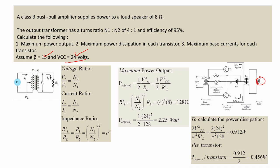This problem involves transformer turns ratio relationships. The secondary voltage is V2 = (n2/n1) × V1, so V2/V1 = n2/n1. The current ratio is I2/I1 = n1/n2 — the inverse. The impedance ratio is RL_dash / RL = (n1/n2)², where n1/n2 is the turns ratio 'a', so RL_dash / RL = a².